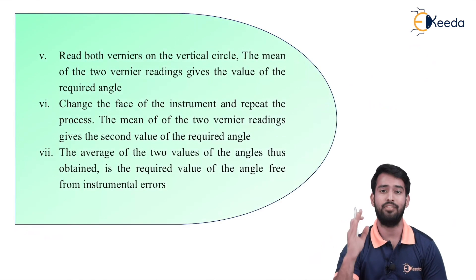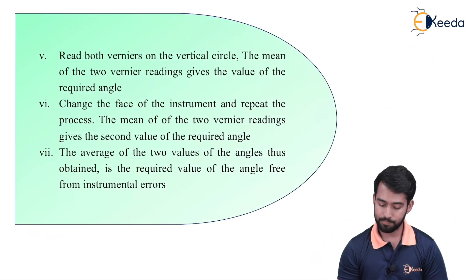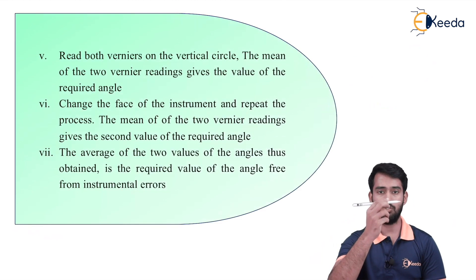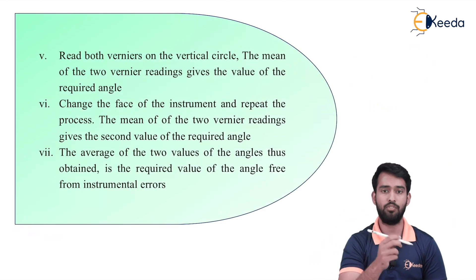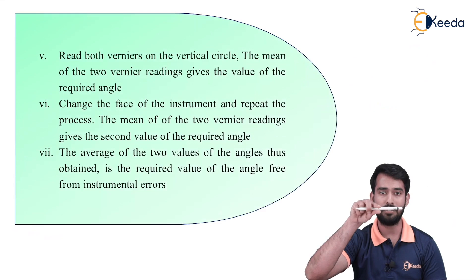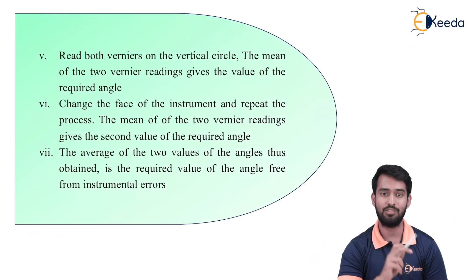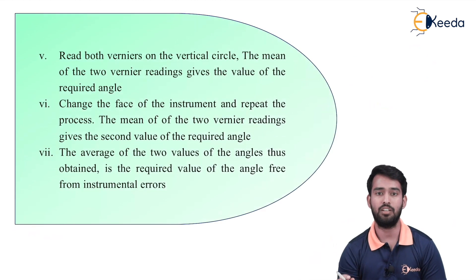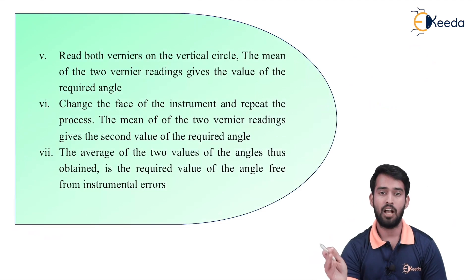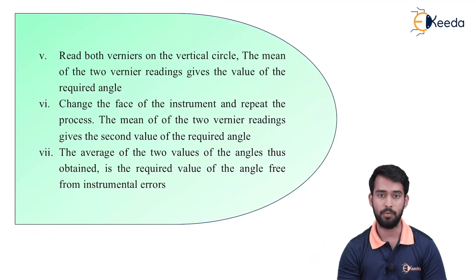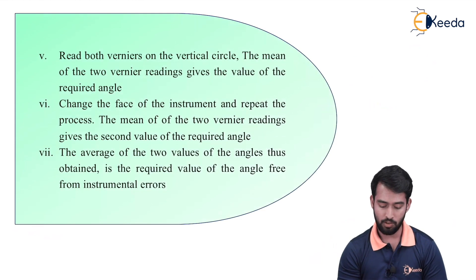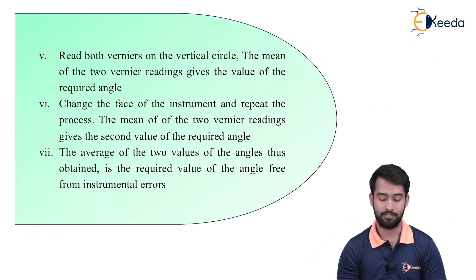Now follow the same procedure and calculate the same angle in face right. Turn the telescope 180 degrees to change its face from left to right. In face right, again bisect the ranging rod at point A and calculate the angle on vernier C and vernier D — this gives the mean reading in face right. After knowing the mean reading of face left and face right, calculate the actual angle AOB by taking the average of the two sets, thereby eliminating instrumental errors.